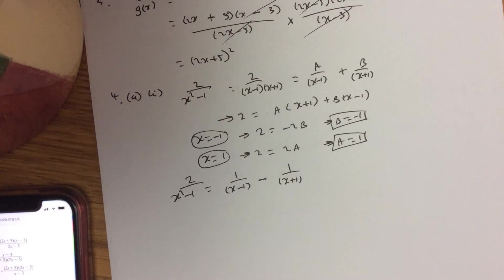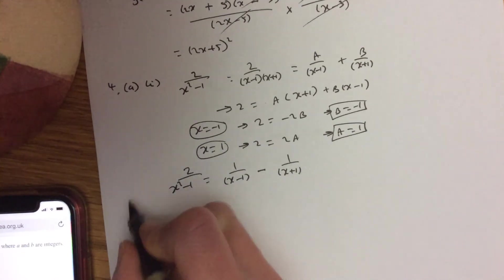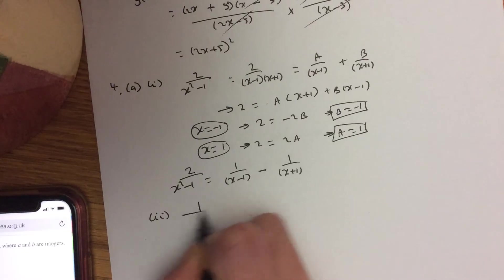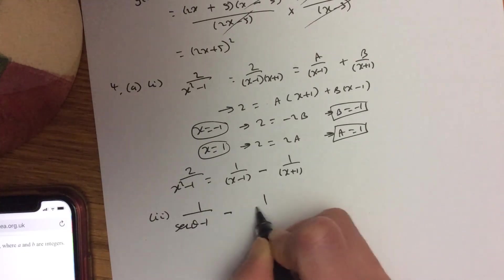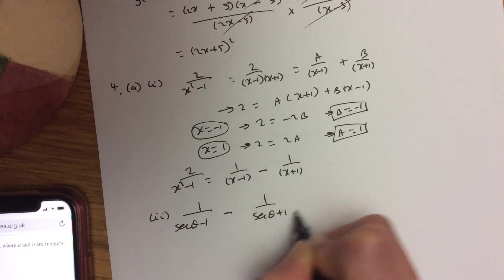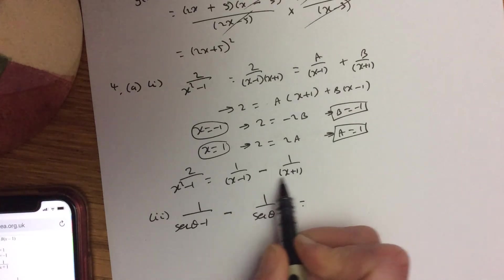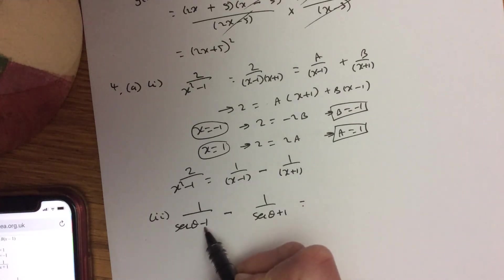Now, we can have a go at part 2. Hence or otherwise. When it says hence, you're going to use your previous answer. So it's 1 over sec theta minus 1, minus 1 over sec theta plus 1. Now, it's a hence, so we're going to use the previous answer. But if you look, your previous answer is here. The only difference between this line and this one is instead of x, you've got sec theta.